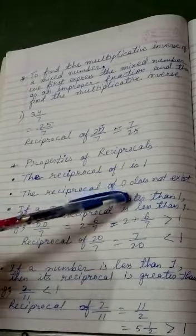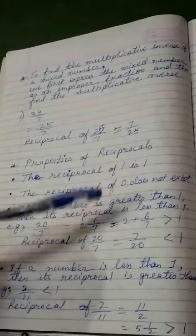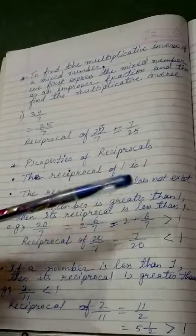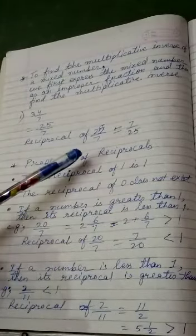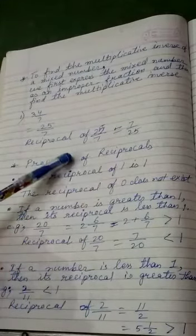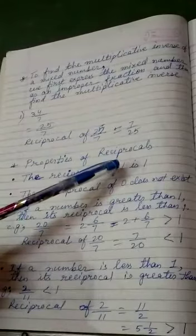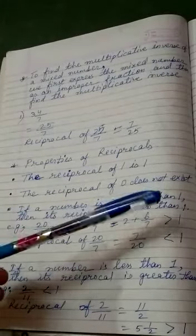The reciprocal of 0 does not exist, means 0 by 5 into 0 is equals to 0. Anything we will multiply with 0, we will get 0 only, but the product should be 1, then one fraction will be the multiplicative inverse of the other. So, reciprocal of 0 does not exist.